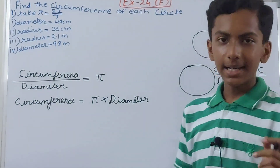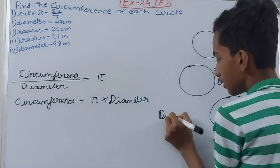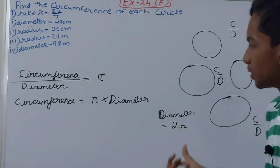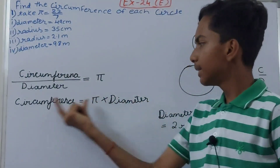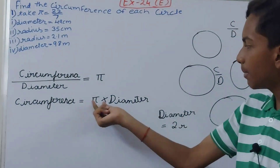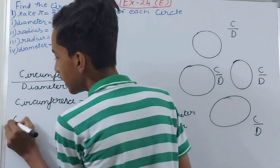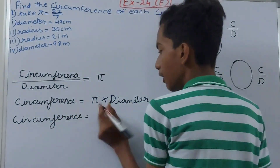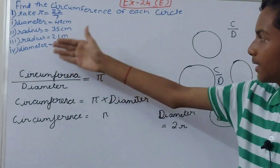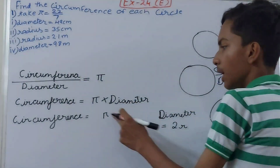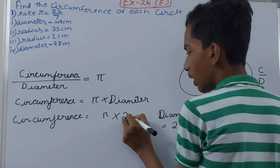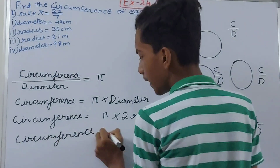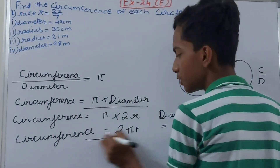We also need to keep in mind that diameter is double of radius, so diameter equals 2r, where r is radius. We can replace diameter with 2r to get: circumference equals pi into 2r, which simplifies to circumference equals 2πr. So we can use either C = πd when diameter is given, or C = 2πr when radius is given.